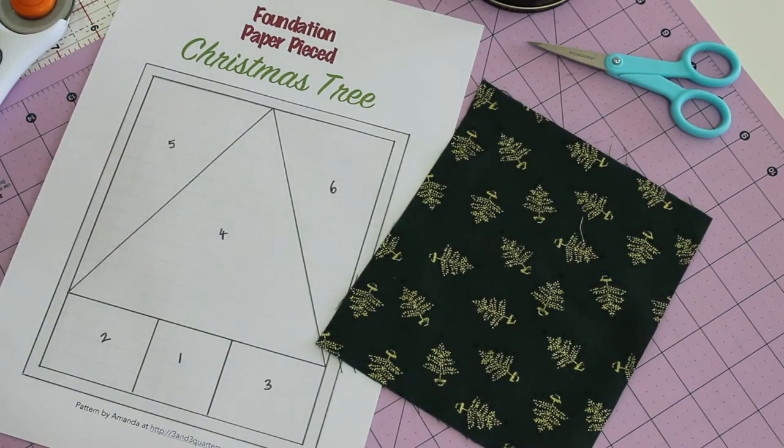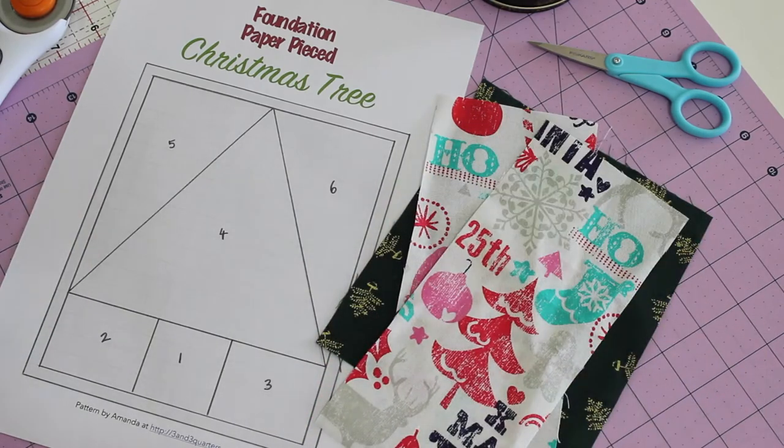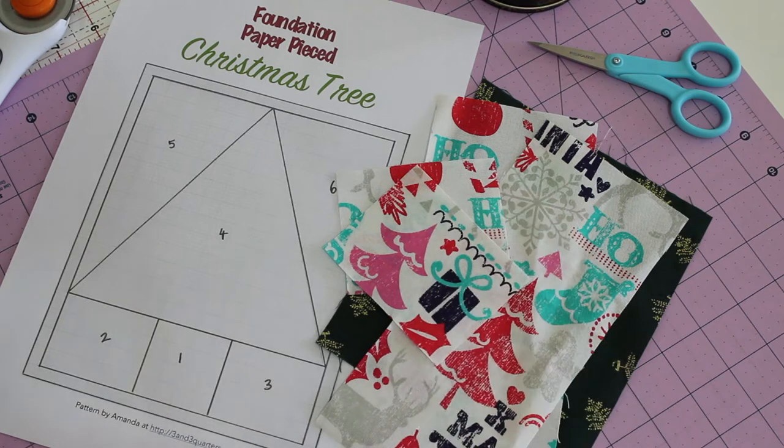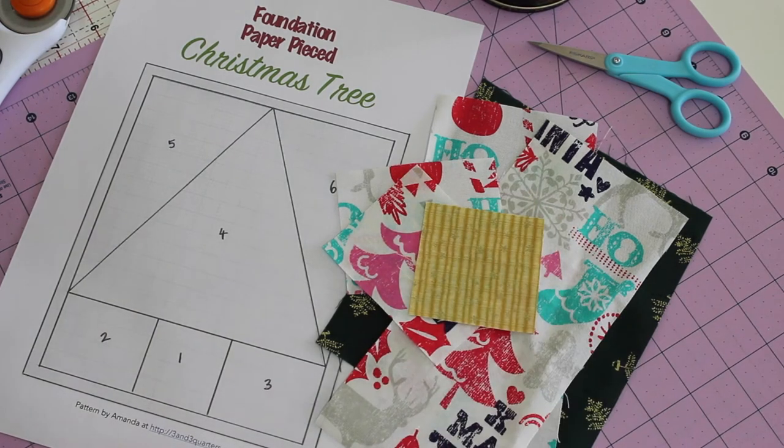Then cut a piece of green fabric for section four, two long strips for sections five and six, two square pieces for two and three, and then another for section one. Ensure all of these pieces measure at least a quarter inch over their section lines along each side.